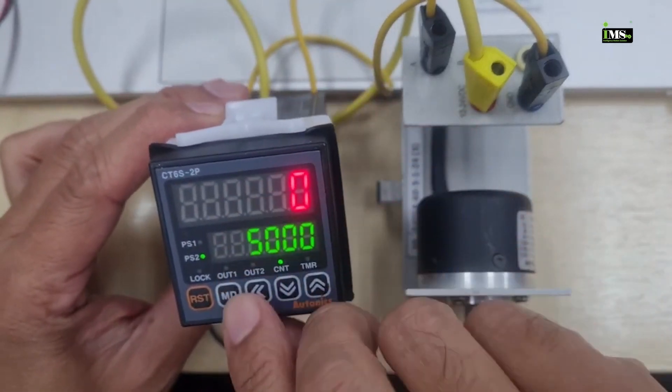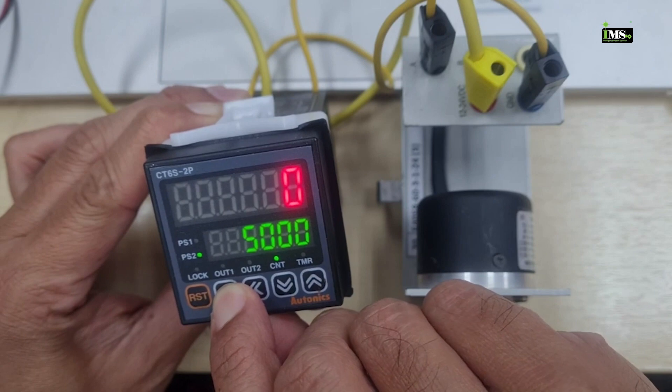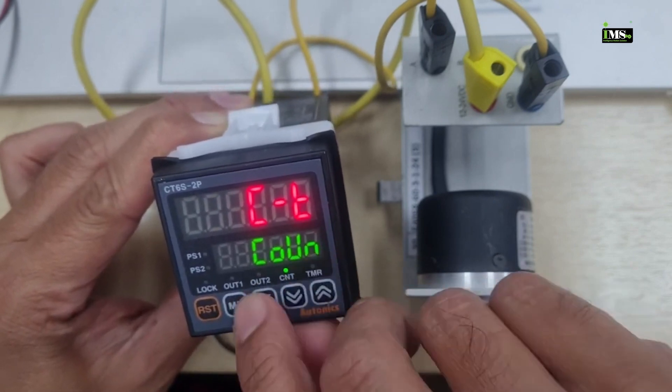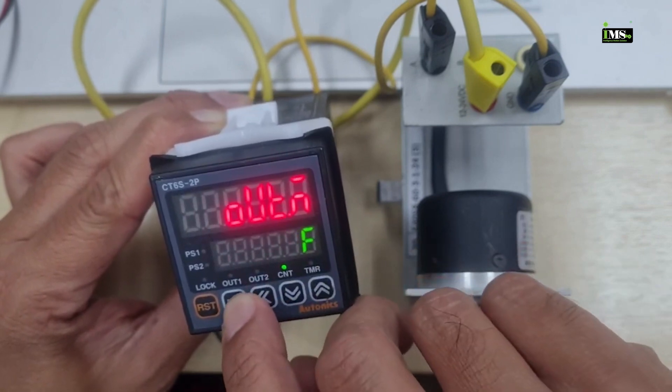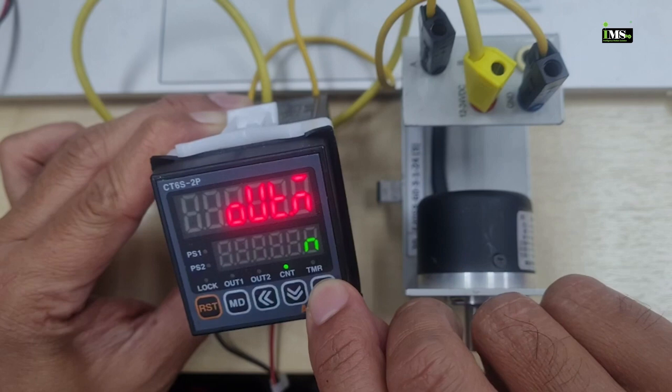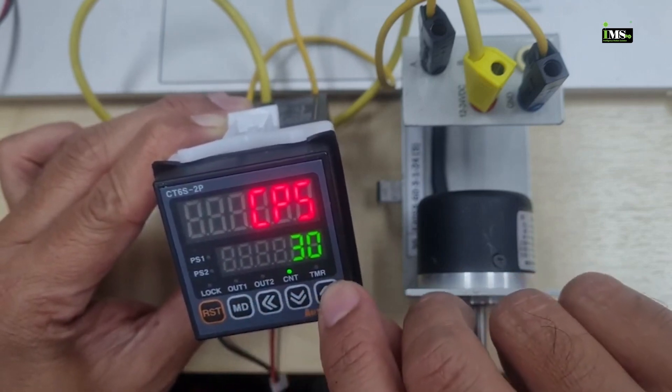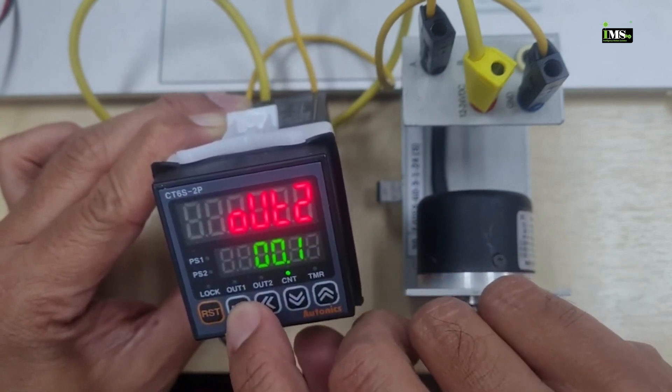Hello guys, this is CT6S Autonics counter. Press mode for three seconds to enter the parameter setting. We choose counter, then press mode. Input will be up count. Press mode again. Okay, this one output mode - we should select output mode C for auto reset.